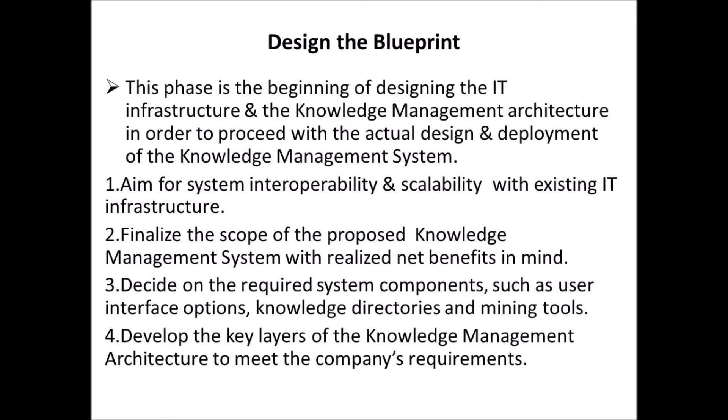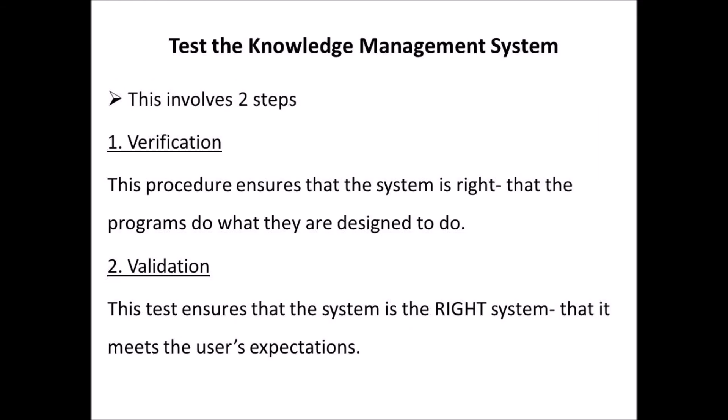Fourth, design the blueprint. This phase is the beginning of designing the IT infrastructure and the knowledge management architecture in order to proceed with the actual design and deployment of the knowledge management system. First, aim for system interoperability and scalability with existing IT infrastructure. Second, finalize the scope of the proposed knowledge management system with realized net benefits in mind. Third, decide on the required system components such as user interface options, knowledge directories, and mining tools. Fourth, develop the key layers of the knowledge management architecture to meet the company's requirements. Fifth, test the knowledge management system.